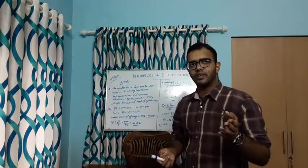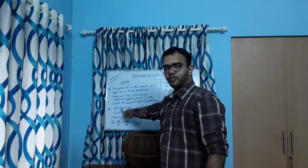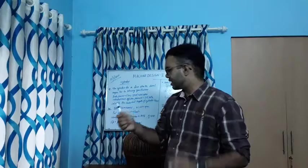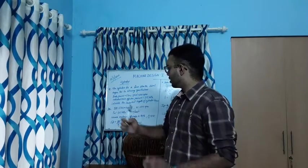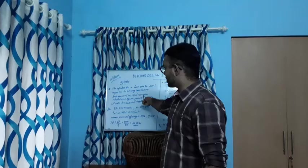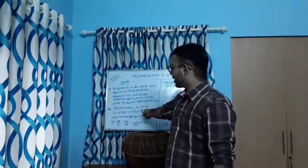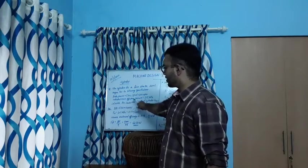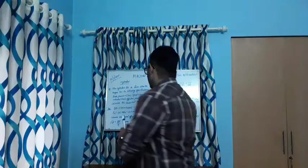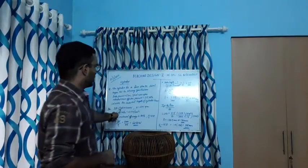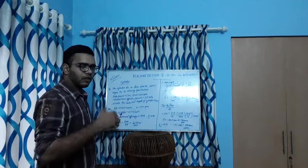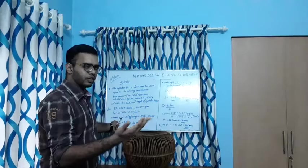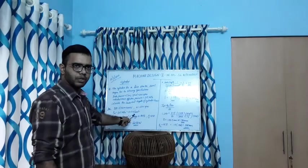First, let's note the given data. Brake power is 5 kilowatt, which we convert to 5000 watts. Speed N is 600 rpm. Indicated mean effective pressure is 0.5 megapascal, which we convert to 0.5 newton per mm² for calculation purposes.